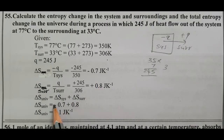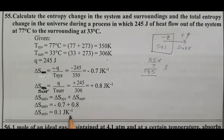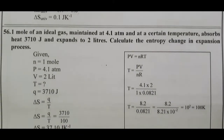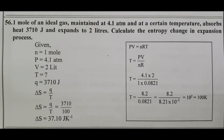Delta S universe equals minus 0.7 plus 0.8 equals 0.1 J Kelvin power minus 1. Delta S universe is positive, therefore the process is spontaneous. Question number 56.